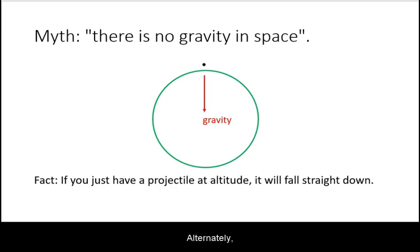Alternatively, without a horizontal velocity, no matter the altitude, the projectile will be pulled back towards the surface by gravity. To have a proper orbit, you need both the horizontal velocity and gravity.